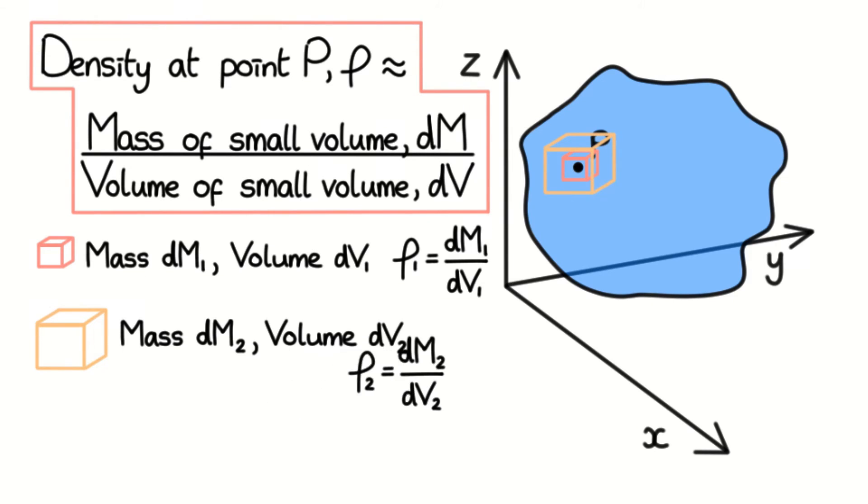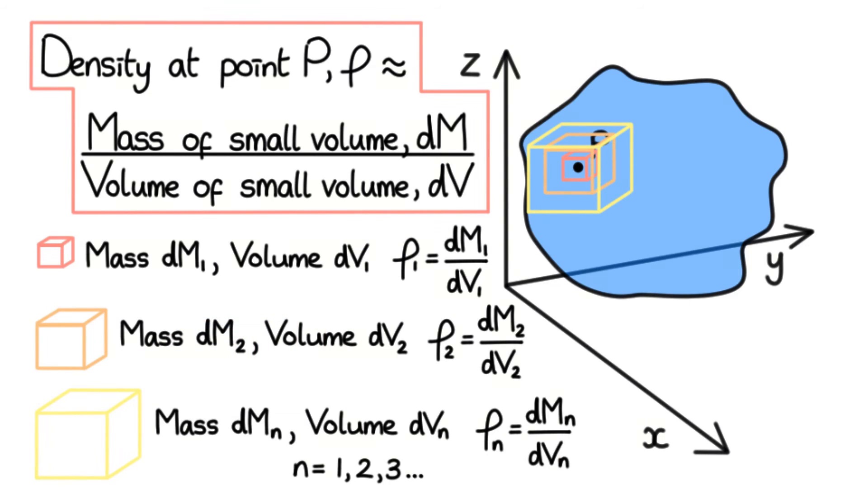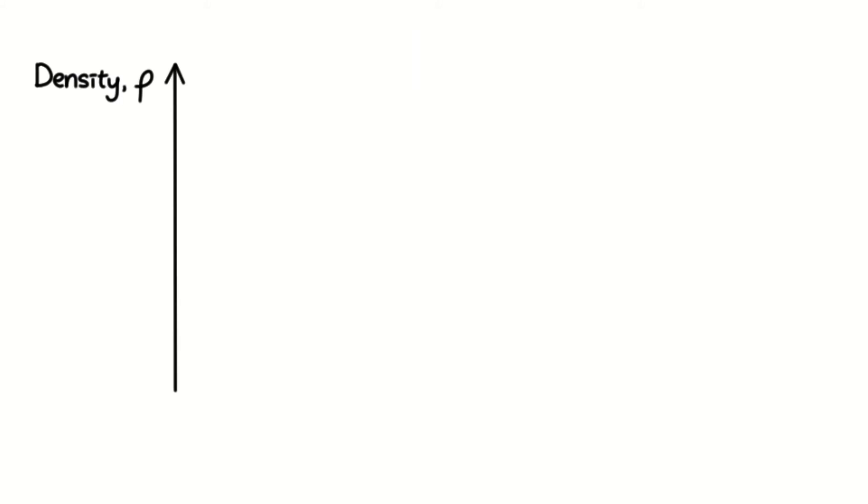We can go on, working out a value of density in the exact same way with different volumes centred on point P. If we then plotted the density calculated from each volume against dV of the volumes, it would look something like this.